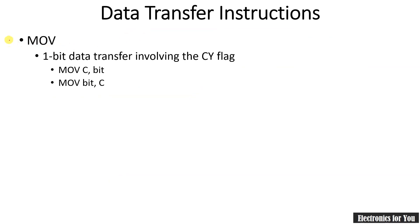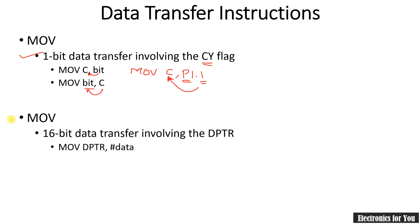The next type is a bitwise MOV instruction involving one-bit data transfer with the carry flag. MOV C, bit copies a bit into the carry flag — for example, MOV C, P1.1 copies port 1 pin 1's value into the carry flag. MOV bit, C copies the carry flag into a specified bit. These are the bitwise data transfer instructions.